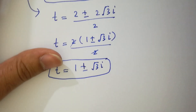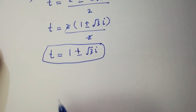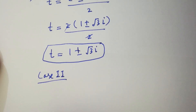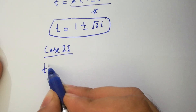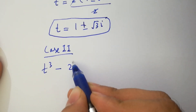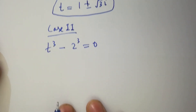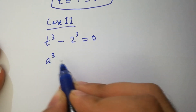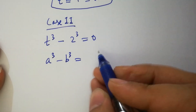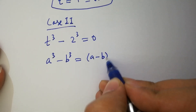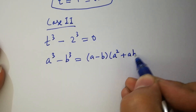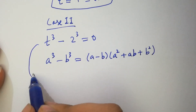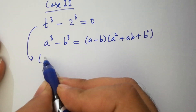Now I am going to move to Case 2, which is t cubed minus 2 cubed equals 0. As we know, a cubed minus b cubed equals a minus b times a squared plus ab plus b squared.